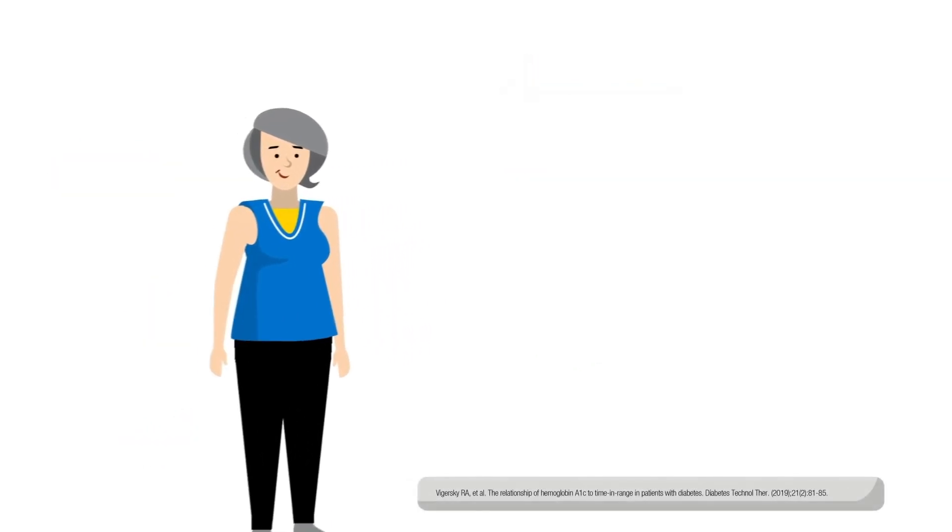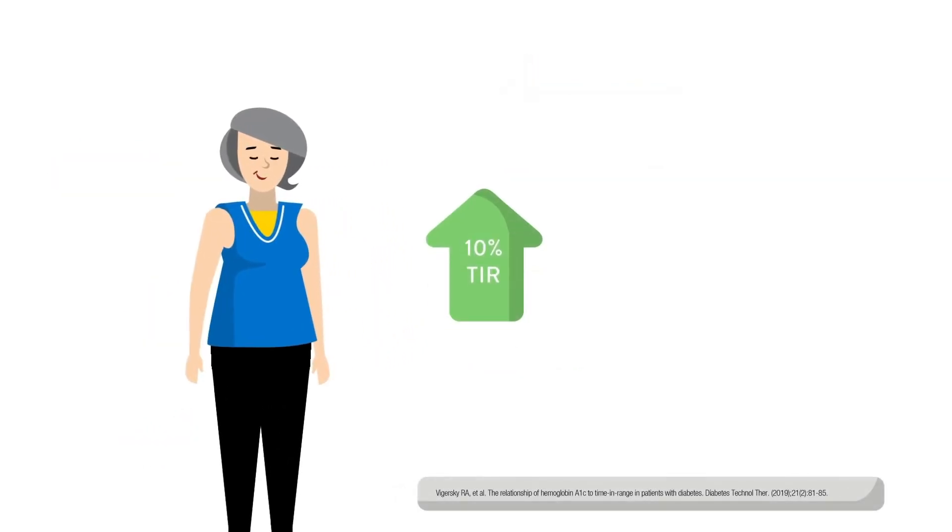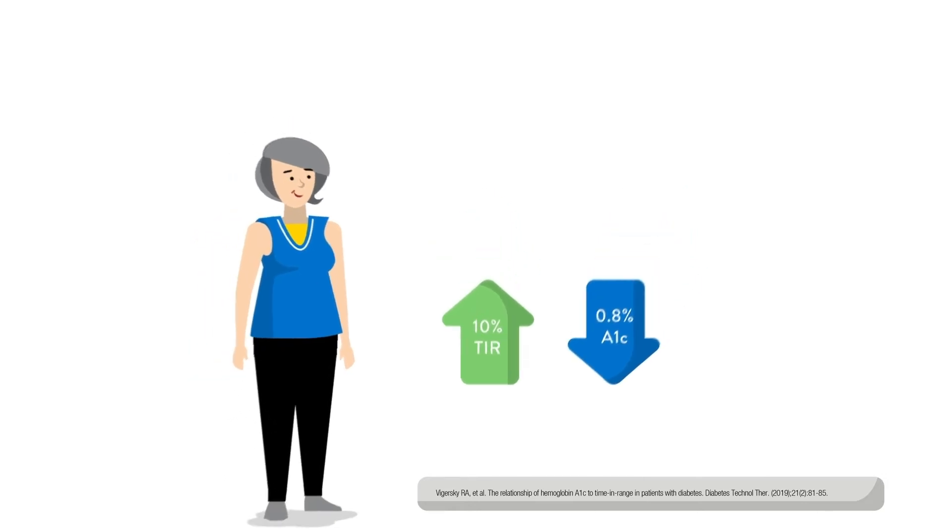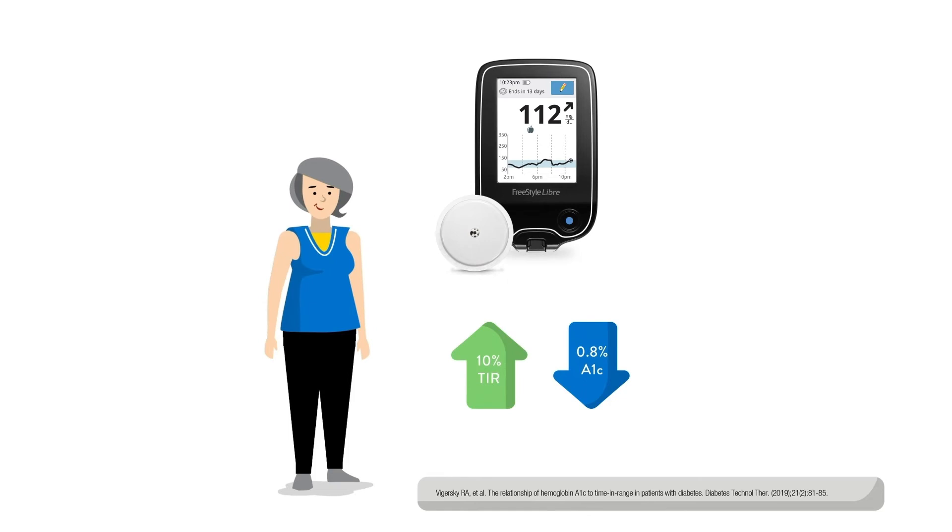A study has shown that every 10% increase in TIR can lower A1c by about 0.8%. Increasing time spent in range has a positive impact on glucose management and can lower risk of long-term eye and kidney complications.